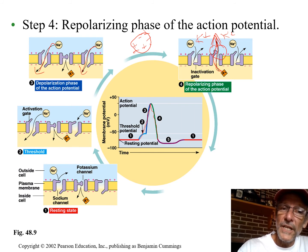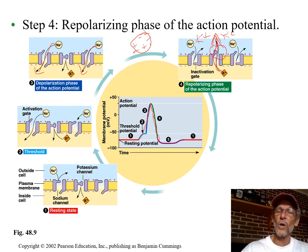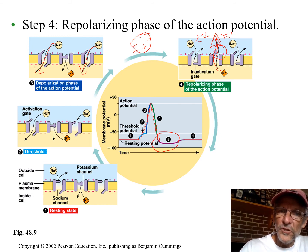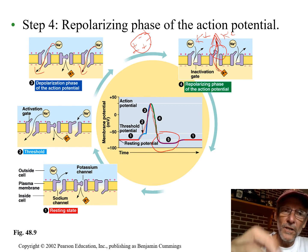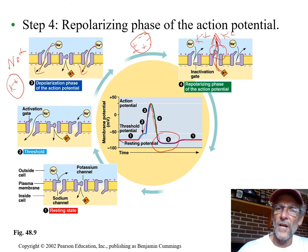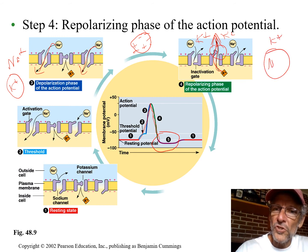By letting sodiums in we became more positive inside, but then by letting potassiums out we got back to around where we started — in fact a little past resting potential. We're back around resting potential, but this neuron is not the same as it was. Before, it had more sodium outside and more potassium inside. Now it's got more potassium outside and more sodium inside.